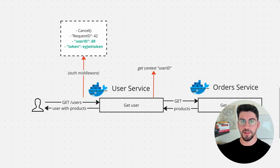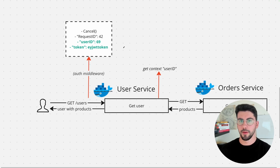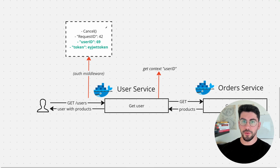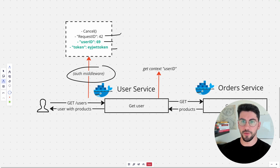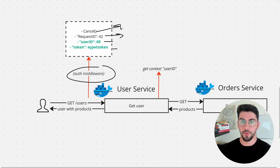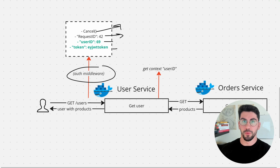You can imagine the context as a box that holds information and travels with each request in your program. It is mostly used to carry contextual information about that request, such as request-scoped values — for example, a user ID and a token from the authentication middleware — as well as trace IDs, and the timeline and deadline for the request. If the request takes too long we can have a timeout, and if it doesn't fulfill that timeout we can cancel the request and fire other cancellation signals.